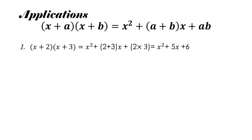The first example: (x + 2)(x + 3). The first term is the square of the variable, which is x square. Here a equals 2 and b equals 3. So a plus b is 2 plus 3 equals 5, giving 5x for the middle term, and ab is 2 into 3 which is 6. So the answer is x square plus 5x plus 6.